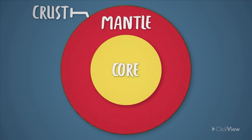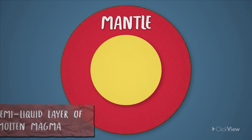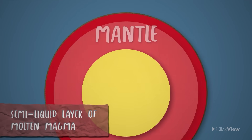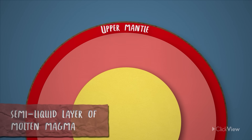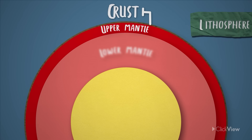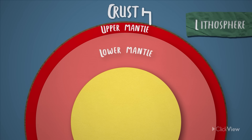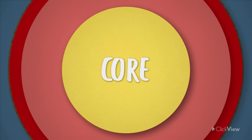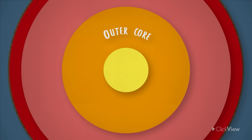Under the crust lies a semi-liquid mantle layer of molten magma, which can be divided into the upper mantle and the lower mantle. Together, the upper mantle and the crust are collectively known as the lithosphere. Below the mantle lies the core, which can also be divided into the outer core and inner core.